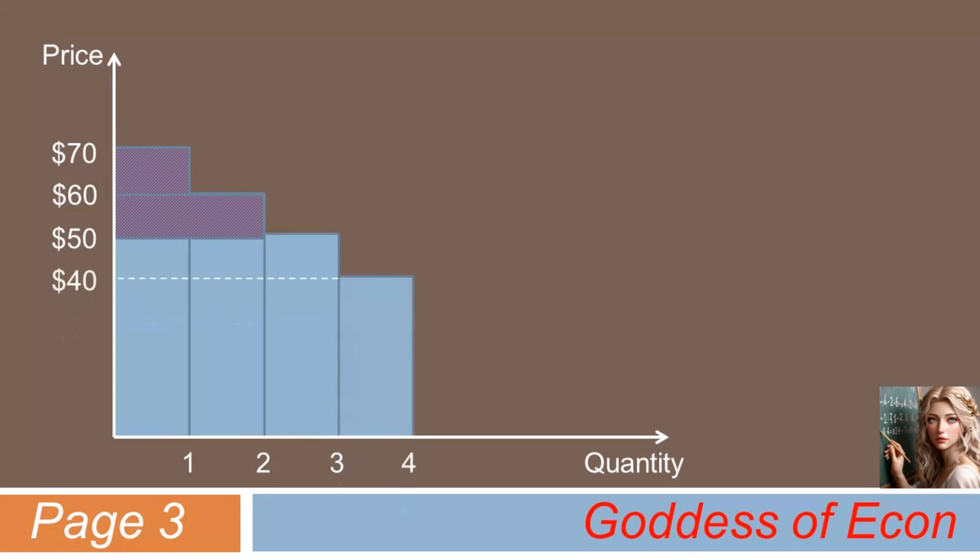Next, suppose the market price of the item is at $40. What would be the total gain of all of the consumers? Here, Michael gains $30 from the trade, Jackie gains $20, and Tito gains $10, with Jermaine not gaining anything. But he is not losing anything either. Therefore, the total gain by all consumers is now $60, which is represented by the shaded area of the graph.